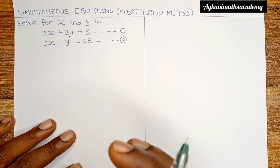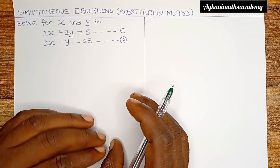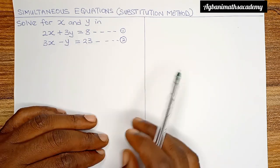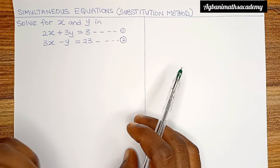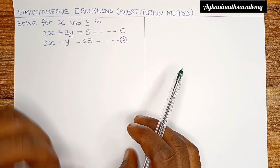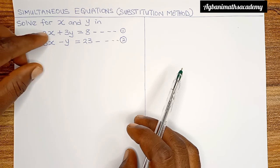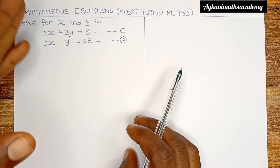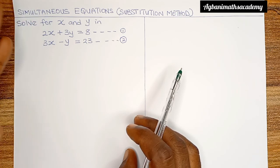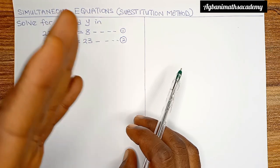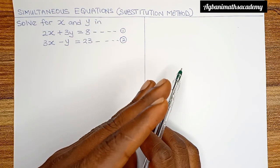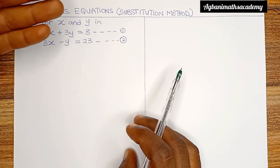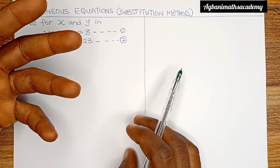For us to solve using substitution method, what we are going to do is make one of the two variables — remember the variables are x and y — the subject of the formula in one of the two equations. So we can make x the subject in equation 1 or equation 2, or we can make y the subject in equation 1 or equation 2.